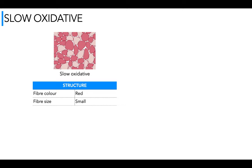Fiber size is small. They have a small neuron size, which leads to slow contractions and lower force. High number of mitochondria — the mitochondria is located in muscle fibers and it's where energy is produced with oxygen, sometimes called the powerhouse of the cell. Because we're slow oxidative and working aerobically with oxygen, it's natural to have a high number of mitochondria in the muscle fibers so we can produce aerobic energy.